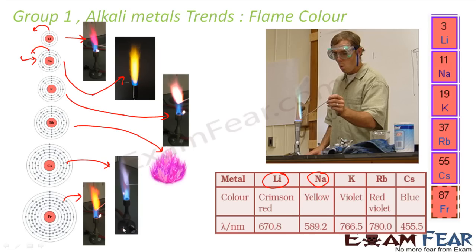These color properties are used to identify metals. If a metal gives yellow color, you can tell it is sodium. If it gives a little orange color, you can say it's francium. If it gives crimson red color, you can say it's lithium. The reason it gets these colors is that the moment you heat the atom, the electron jumps, and when it comes back it emits light of a certain wavelength. The wavelength determines the color of the light.